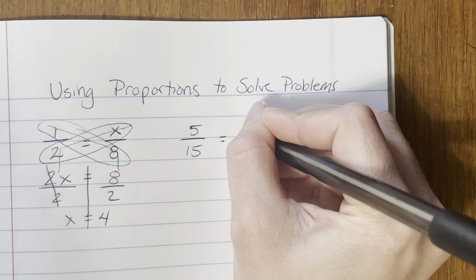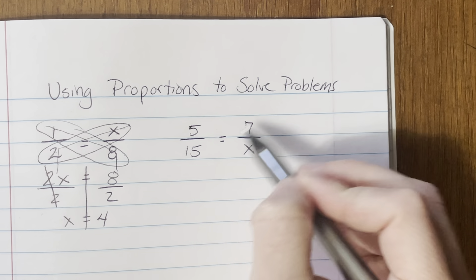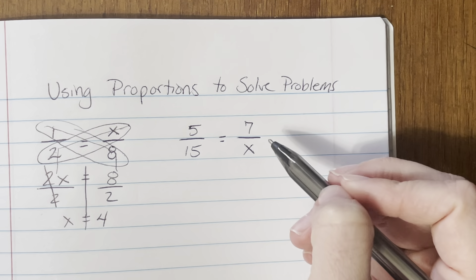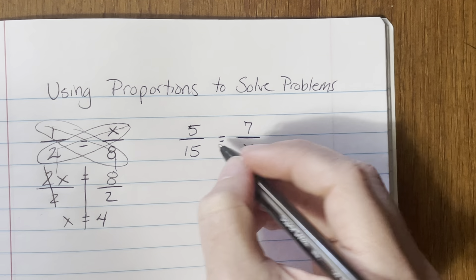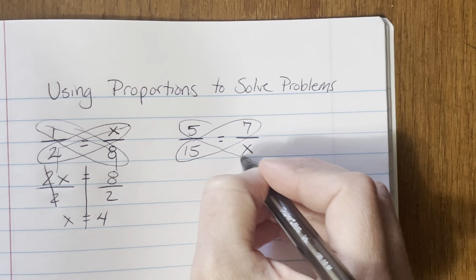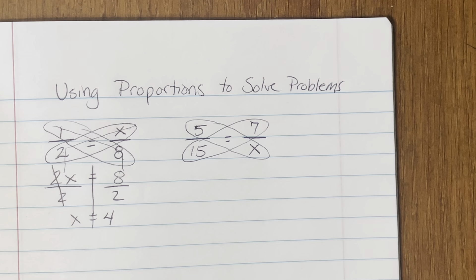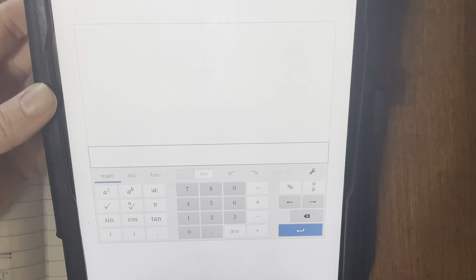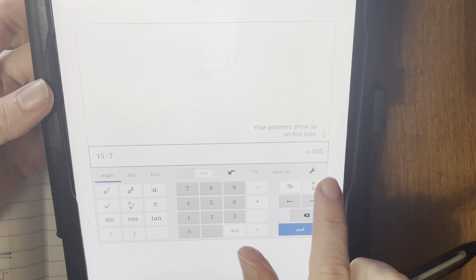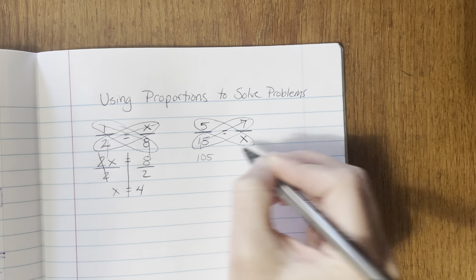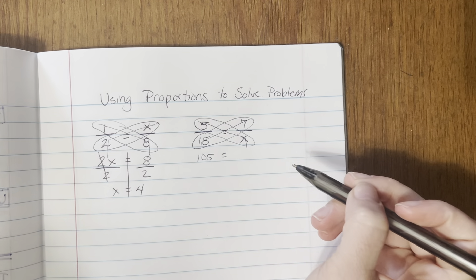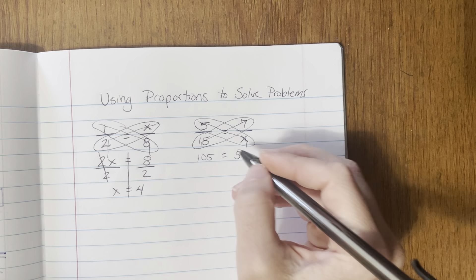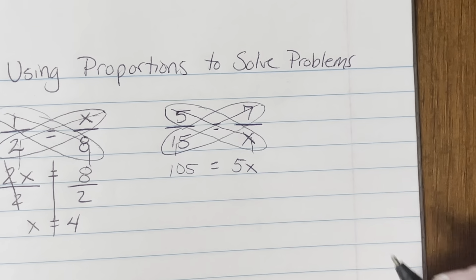Let's try another one. I've got 5/15 and that's going to equal 7 over some unknown number. This is a proportion because we can use the butterfly method — it's just written as fractions, not in a chart. I circle the things across from each other to make the butterfly, then multiply. You can use your calculator on this. In Desmos, let's do 15 times 7, which gives us 105.